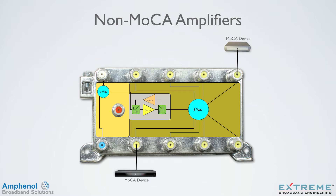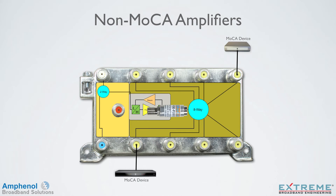Another challenge with traditional multiple output amplifiers is where do you place the MoCA filter? If placed on the input, it will stop the MoCA signal that may have passed through the amplifier from going up the drop, but you don't get the second benefit of the filter — reflecting the signal back into the MoCA network. Ideally, the MoCA filter should be placed on the input of the splitter, but being that the splitter is integrated into the amplifier, there's no way to place it at that location.